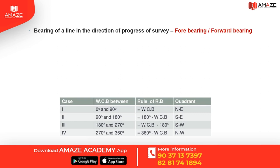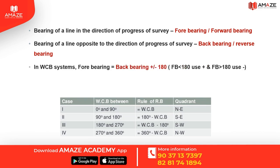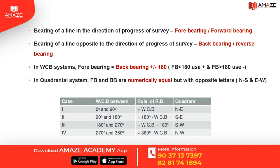Bearing of a line in the direction of progress of survey is fore bearing or forward bearing. Bearing of a line opposite to the direction of progress of survey is back bearing or reverse bearing. In whole circle bearing system, fore bearing equals back bearing plus or minus 180. If fore bearing is less than 180, use positive; if fore bearing is greater than 180, use negative. In the quadrantal system, fore bearing and back bearing are numerically equal but with opposite letters. For conversion between whole circle bearing and reduced bearing: first quadrant — reduced bearing equals whole circle bearing; second quadrant — reduced bearing equals 180 minus whole circle bearing; third quadrant — reduced bearing equals whole circle bearing minus 180; fourth quadrant — reduced bearing equals 360 minus whole circle bearing.